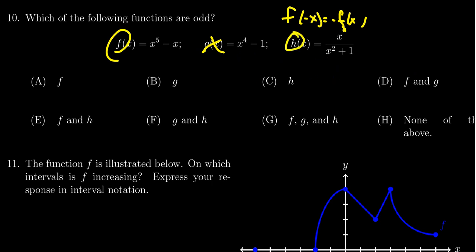So we need to include that in our answer as well. So g is not odd because it was even. f and h are both odd functions. So the correct answer would be choice e, f and h are odd.